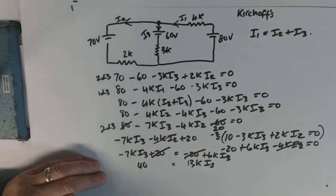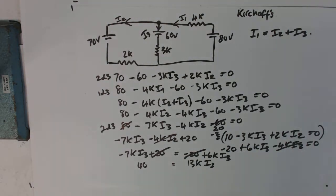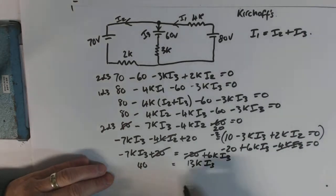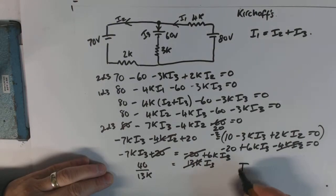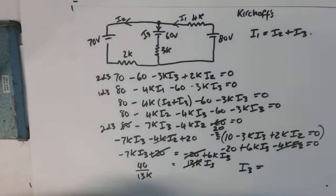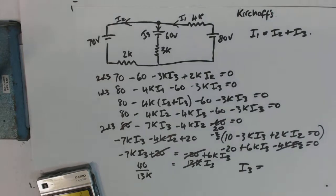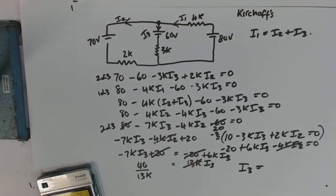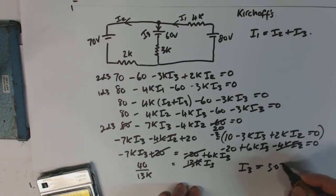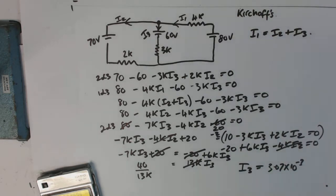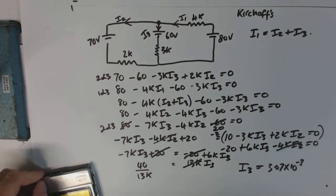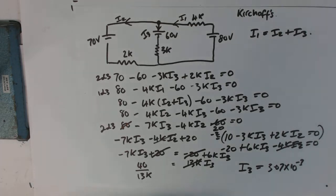And I3 is going to be equal to, let me just have a little look here, 40 divided by 13,000 equals 3.07 times 10 to the minus 3, which is 3.07 milliamps and it's in the right direction.